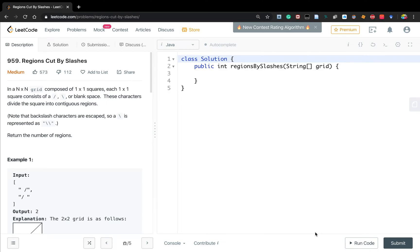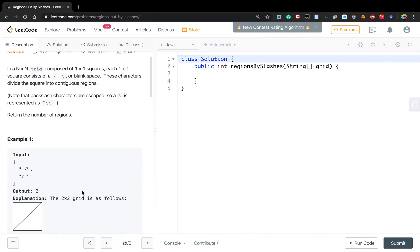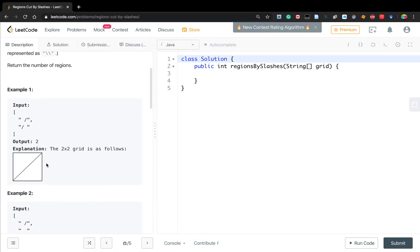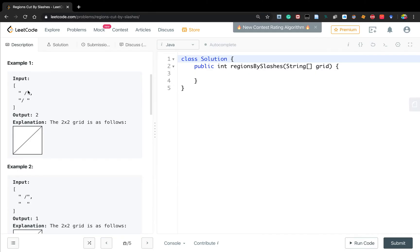Hello friends, today let's solve regions cut by slashes. In a given n times n grid composed of one times one squares, each square consists of a slash, backslash, or blank space. These characters divide the square into continuous regions. Note that backslash characters are escaped, so a backslash is represented as double backslashes. Return the number of regions.